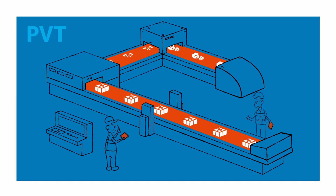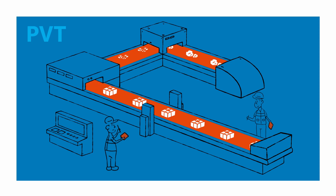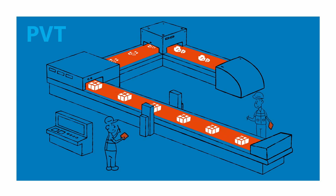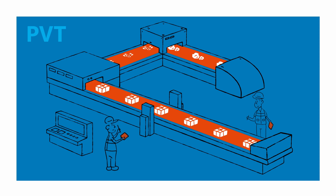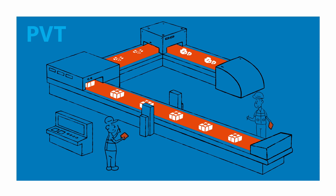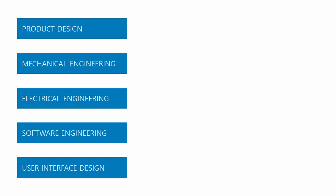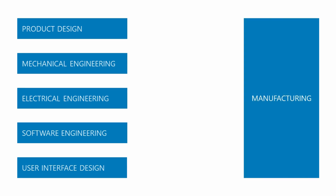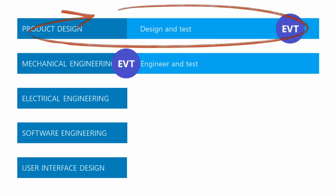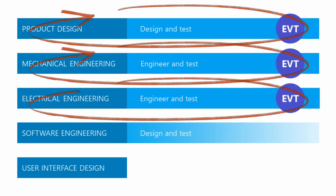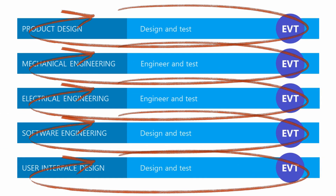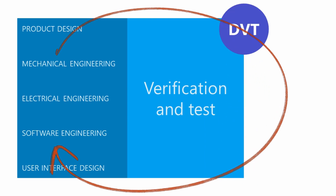The complication lies in the fact that there are many disciplines involved in each phase — for example, design, mechanical, electrical, software engineering, user interface, and manufacturing. Each discipline will work on its own EVT phase where it takes several rounds of prototyping, testing, discussion, and improvement. But in the end, they need to merge into a system that works during production.